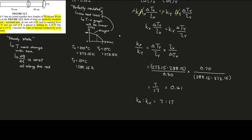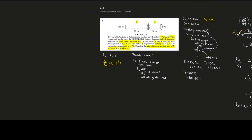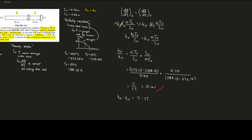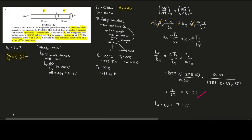That's the answer for Question 4. Some of you may notice this looks different from the answer at the bottom of your tutorial sheet — the textbook answer appears to have an algebraic mistake, ending up with 1 over 0.41 instead. The correct answer is k_x / k_y = 0.41. Thank you very much.